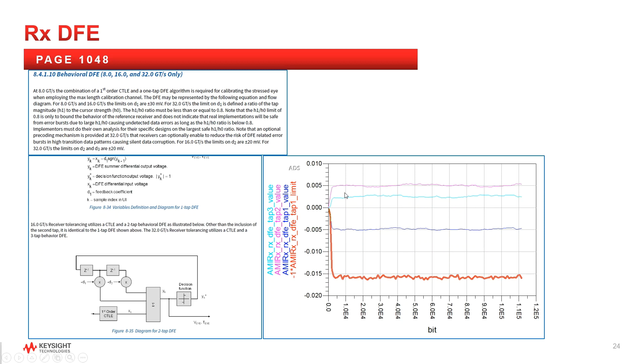This restriction is to help protect from error bursts. Although the spec mentions specific designs may need to do their own analysis on the largest safe H1 to H0 ratio. At any rate, the ratio of H1 over H0 less than 0.8 was implemented in the receiver model. The calculation is made available to users through the AMI parameter output. For each simulation, the user can plot tap one limits, which is shown here in the red curve, alongside the DFE coefficients, which is the other curves, to observe their behavior over time.